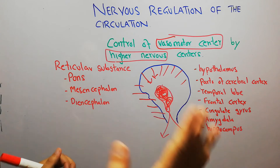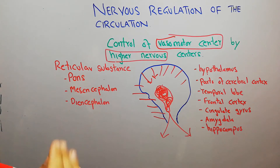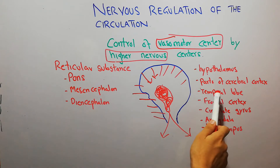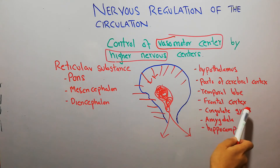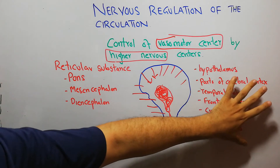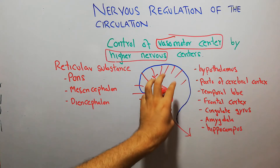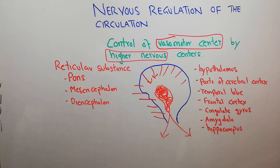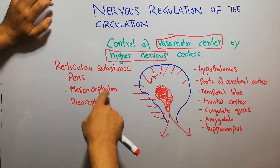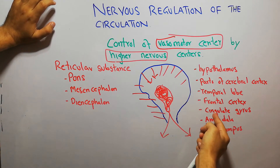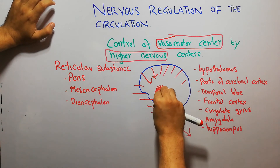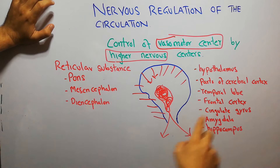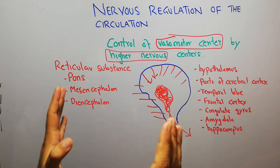The motor cortex may excite or inhibit the vasomotor centers. Additionally, the temporal lobe, frontal cortex, cingulate gyrus, amygdala, and hippocampus are all different parts of the human brain which have some influence on the vasomotor center. When we say that these areas — pons, mesencephalon, diencephalon, hypothalamus, hippocampus, cingulate gyrus, and amygdala — influence the vasomotor center, it clearly means they are all involved in the regulation of circulation.